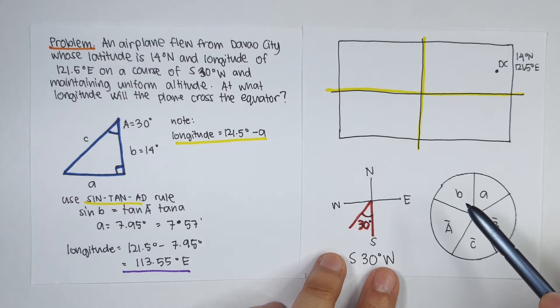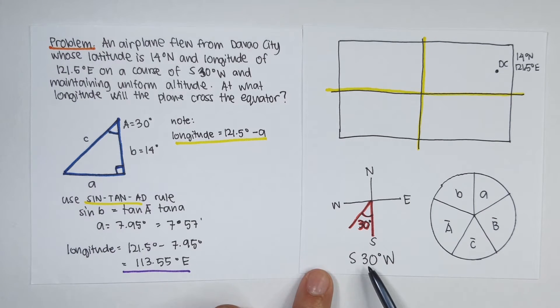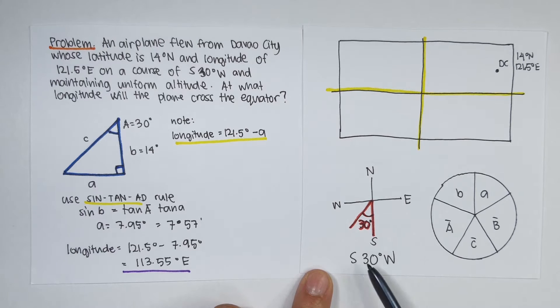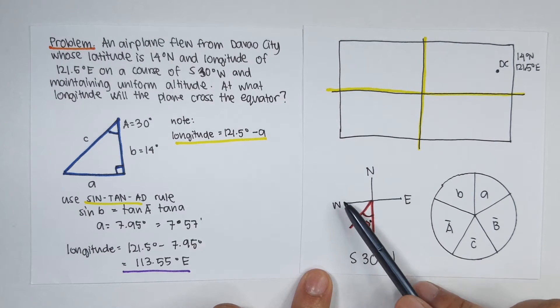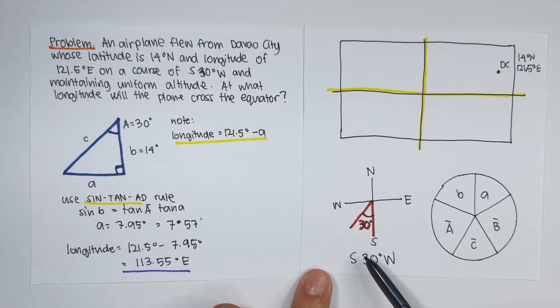There is an airplane from Davao City flying at a course of 30 degrees west of south. So that is, if this is north, east, west, and south, so this angle is 30 degrees. So this is 30 degrees west of south.